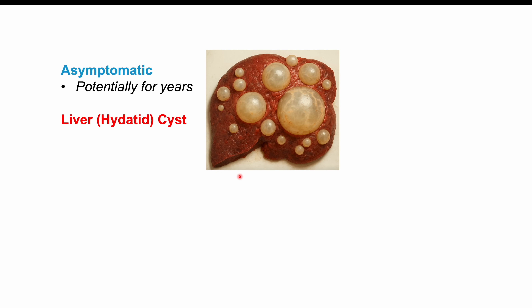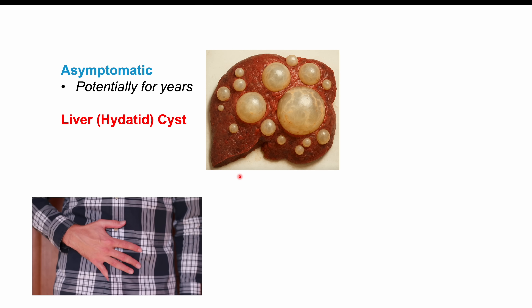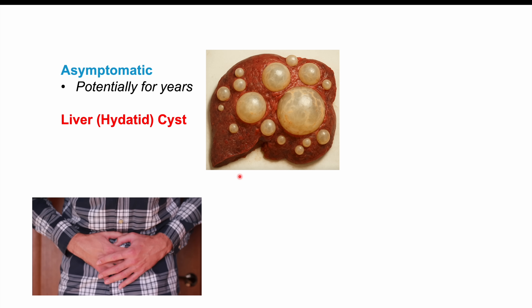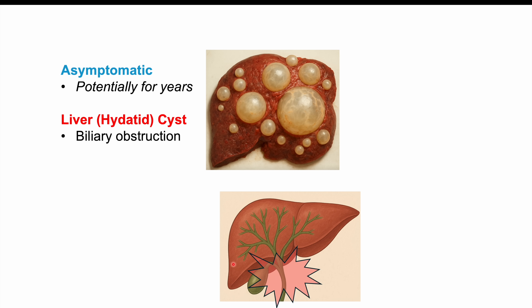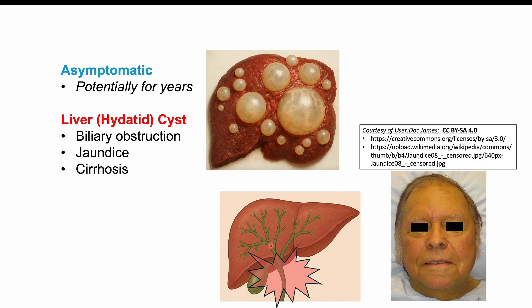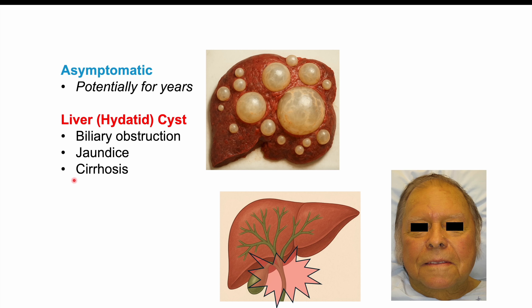Most often the cyst is going to be singular, but in about 20 to 40 percent of cases there can be multiple cysts, occurring in different parts of the body. After some time, as that cyst increases in size, we can start to see signs and symptoms including abdominal pain and biliary obstruction. Looking at the liver's intrahepatic and extrahepatic biliary ducts, cysts that become larger can impinge on biliary ducts, leading to biliary obstruction, which causes issues including jaundice. We can also see pruritus as bile salts begin to accumulate. If the cyst grows large enough to impact liver functioning, we can even see cirrhosis in some cases.